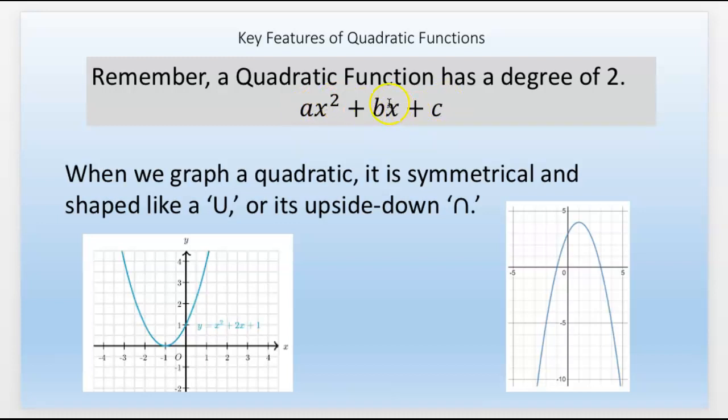b and c can be 0, but a cannot be 0. a can be 1, but it cannot be 0 or else the quadratic goes away. Then it's not a quadratic. But the b and the c, they can be 0.